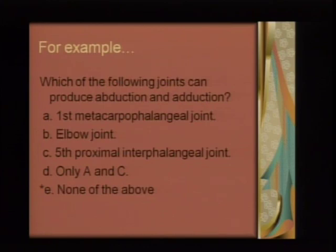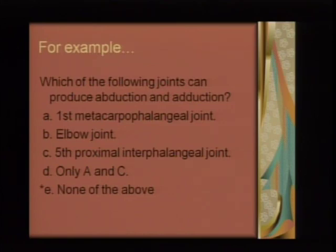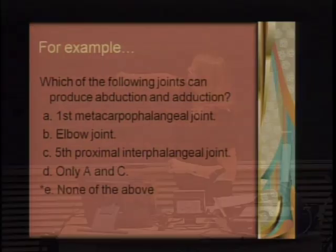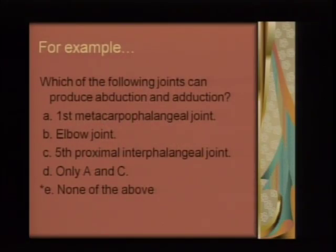Here's an example exam question — maybe not on this year's exam, but an exam question nonetheless. Which of the following joints can produce abduction and adduction? These are things I promise you will learn. There's a list of joints, and 'none of the above' shows up a lot — I'm all about using none of the above, so just be aware. This is pretty basic didactic — it's asking about what a joint can do, so it's testing function. Name, location, function: that's the basic gist of the closed book exam experience.